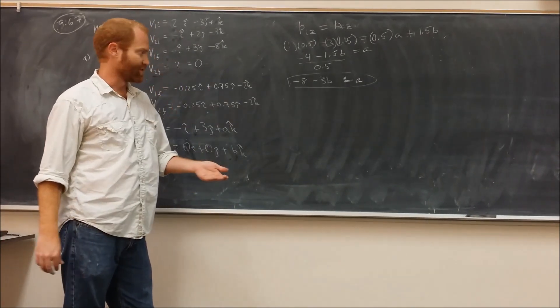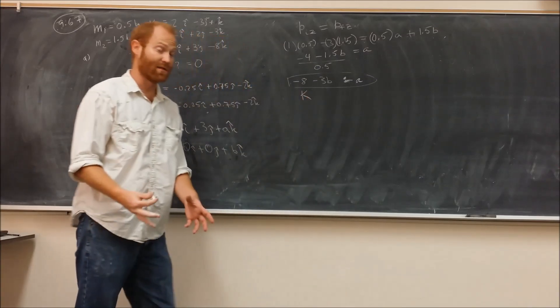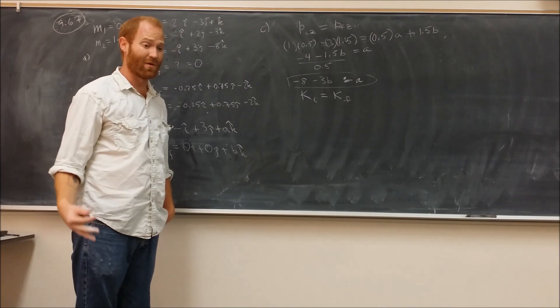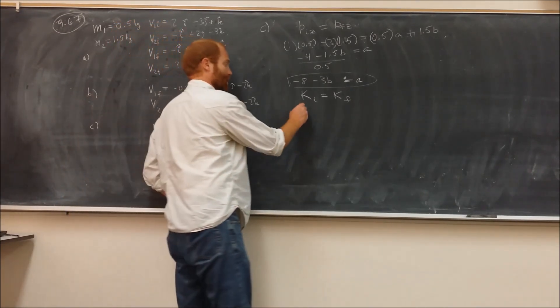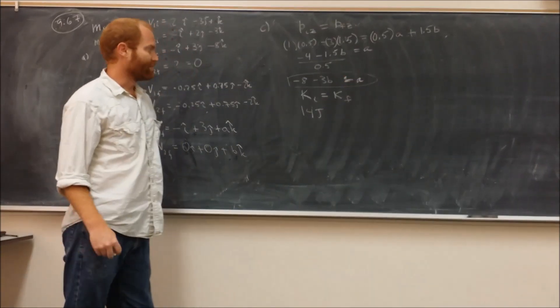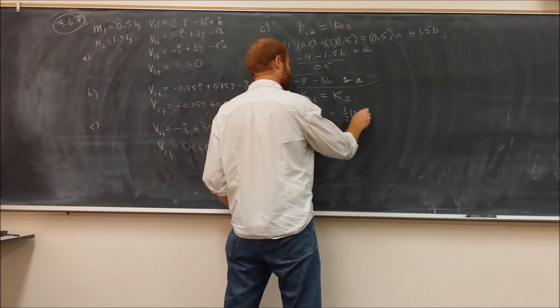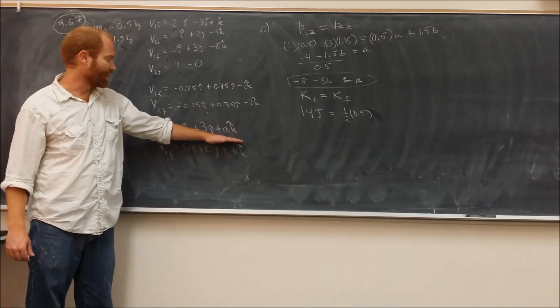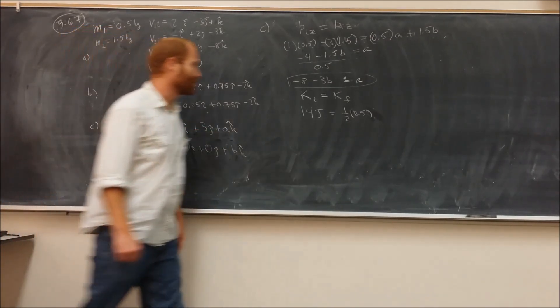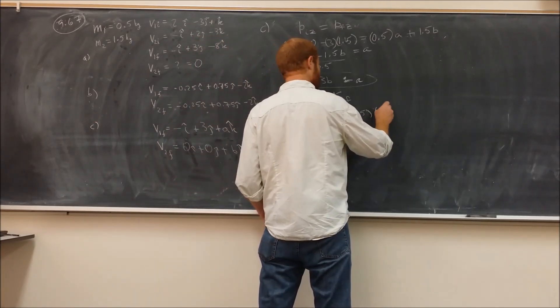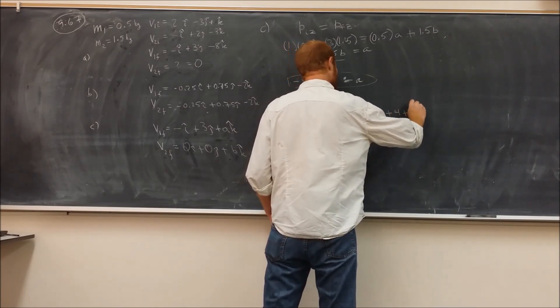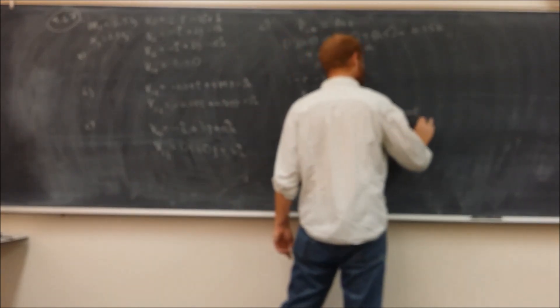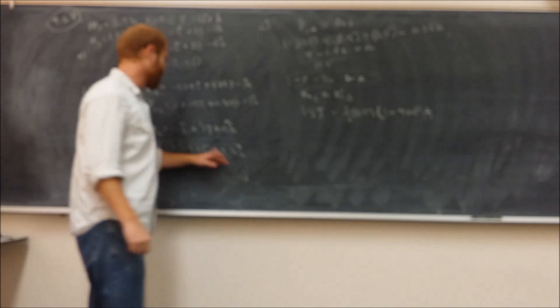The next thing that we can use is conservation of energy. Conservation of energy tells us that the kinetic energy, because they tell us this is an elastic collision in part c, it tells us the initial kinetic energy equals the final kinetic energy. The initial kinetic energy of this system is going to be exactly what was before. It's going to be 14, because it's the exact same expression as we just calculated a second ago. The final kinetic energy in this case is going to be 0.5 times mass 1, multiplied by its final velocity here. Now we have to square each of these. 1 squared plus 3 squared plus this squared. So we're going to get 1 plus 9 plus a squared. Plus then we have this one right here. It has no components here, so it's just going to be 1.5 times b squared.